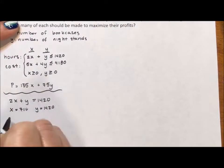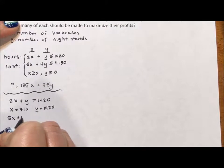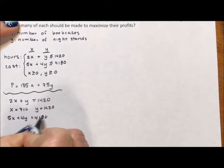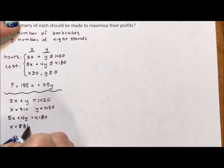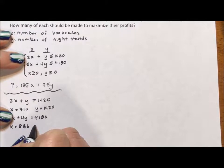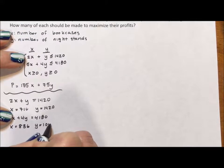For my second equation, I have 5x plus 4y equals 4180. For my x intercept, I set y equal to 0, and x is going to equal 836. Then I set x equal to 0, and y is going to equal 1045.